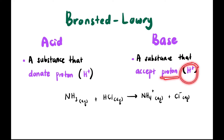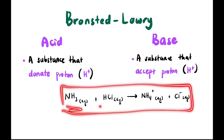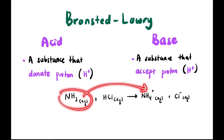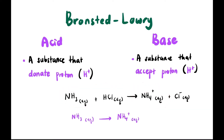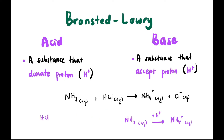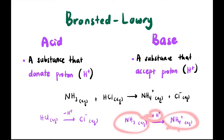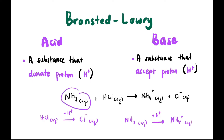Checking the equation NH₃ + HCl → NH₄⁺ + Cl⁻: NH₃ appears to have received one H⁺ to become NH₄⁺, while HCl has lost its H⁺ to become Cl⁻. So according to Bronsted-Lowry, whoever donates H⁺ is the acid and whoever accepts H⁺ is the base. Therefore NH₃ is the base and HCl is the acid.